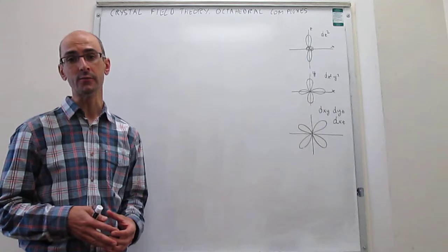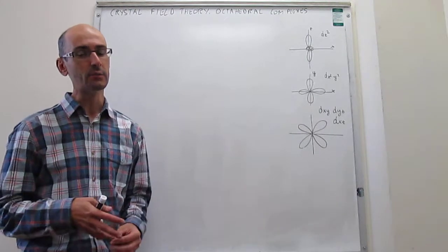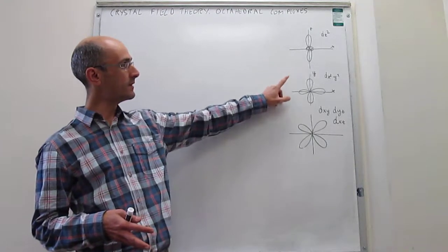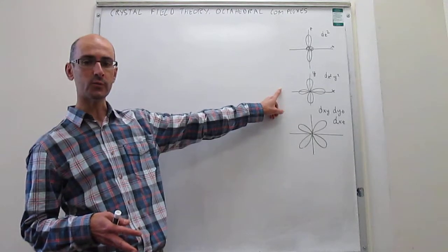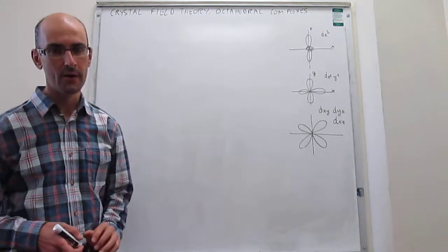If this is an octahedral ligand, what we've seen in a prior video is that the dz² and the dx²-y² are destabilized more than the three other d-orbitals.